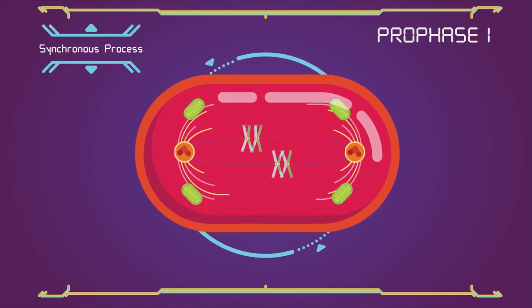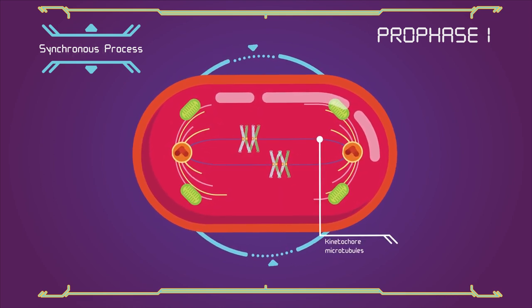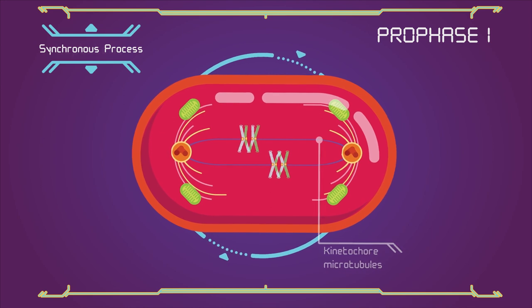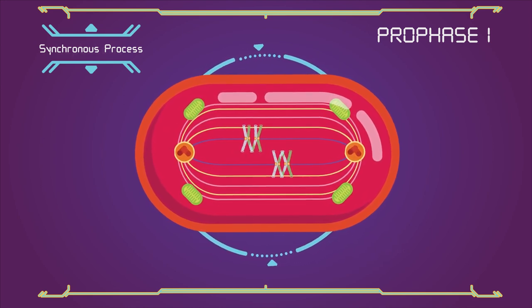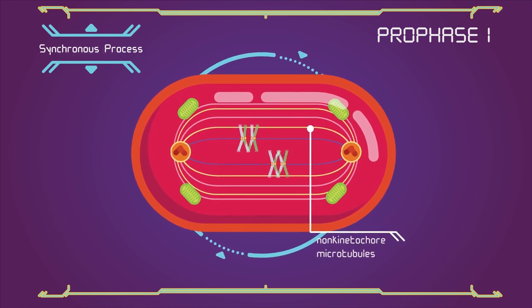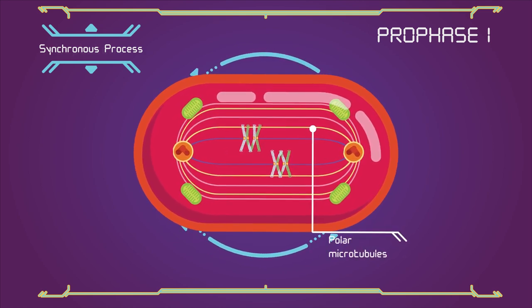Microtubules that attach to the kinetochores are known as kinetochore microtubules. Other microtubules will interact with microtubules from the opposite centrosome. These are called non-kinetochore microtubules, or polar microtubules.